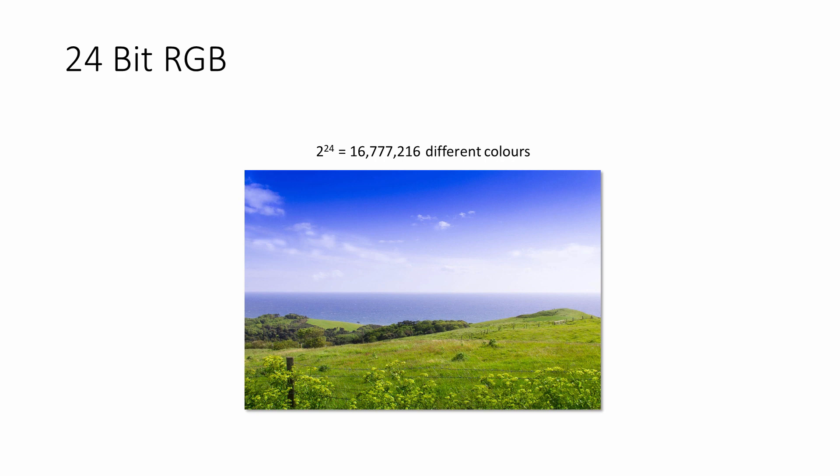Describing the colour of each pixel with 24 bits depends on the fundamental principle of light — namely, that you can make pretty much any colour you need, including white, by mixing together different amounts of the primary colours red, green and blue. Hence the term RGB.